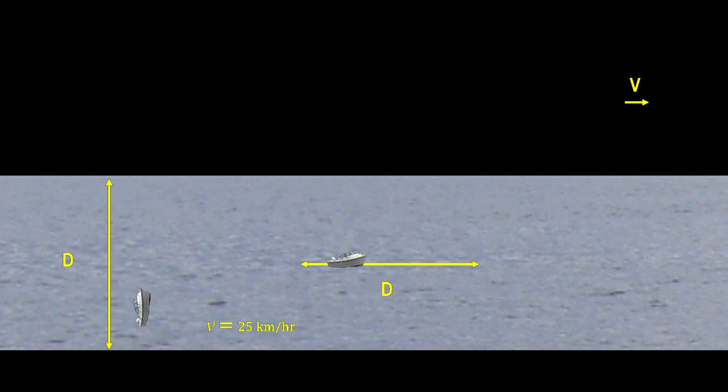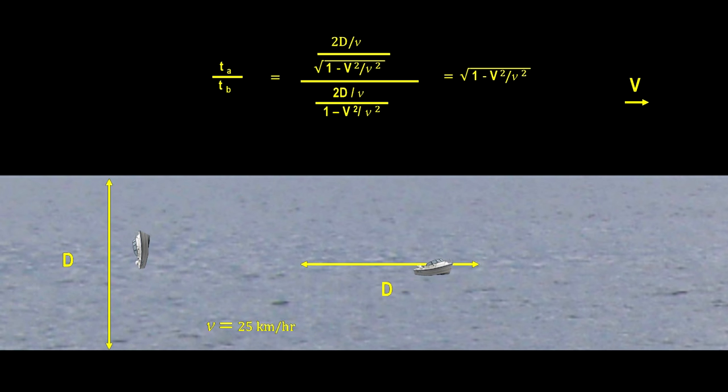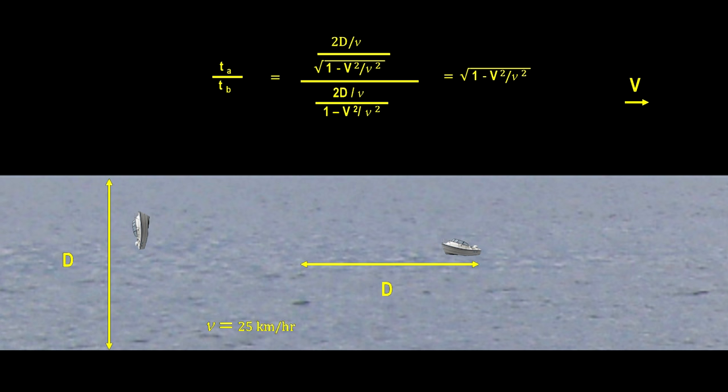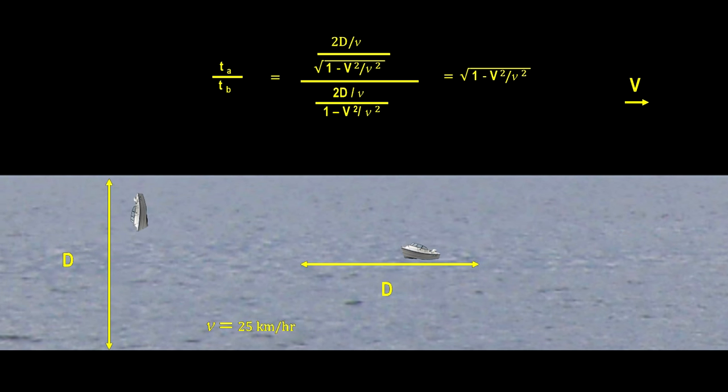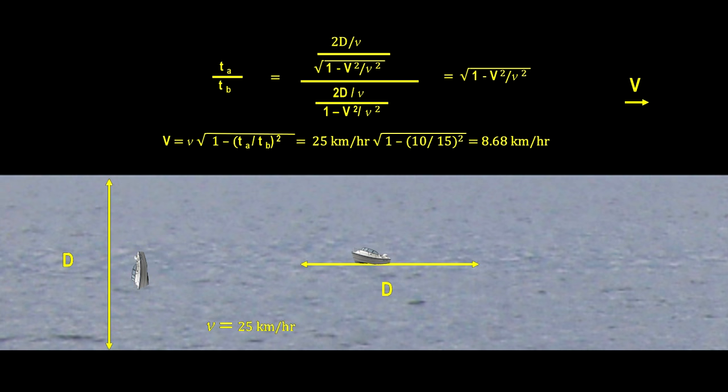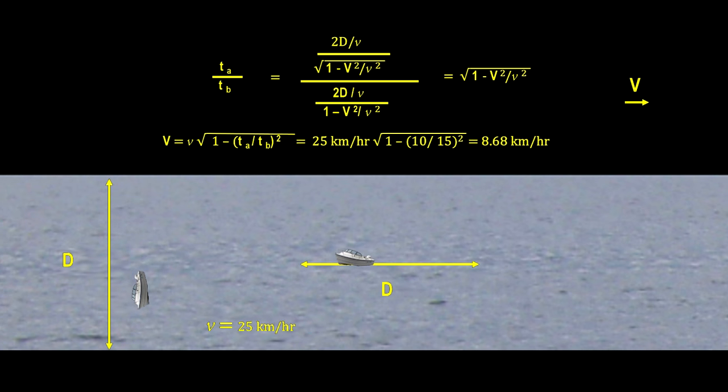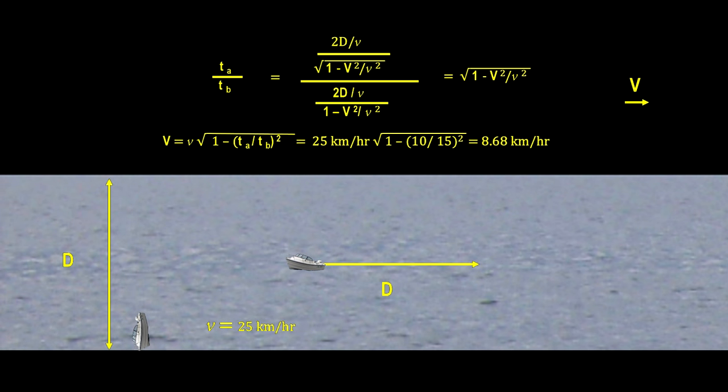Now back to our example. If we take a look at the ratio of the cross-river time, t sub a, to the down-river time, t sub b, we see that it creates an equation that can be solved for the velocity of the river. For example, if the boat speeds are 25 kilometers per hour, and we carefully measure the time of the two round trips to be 10 minutes for the cross-river round trip and 15 minutes for the down-river round trip, then we can find the river flow. In this example, it's 8.68 kilometers per hour.